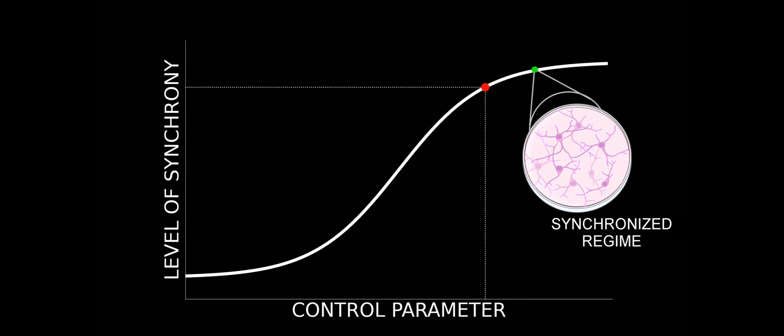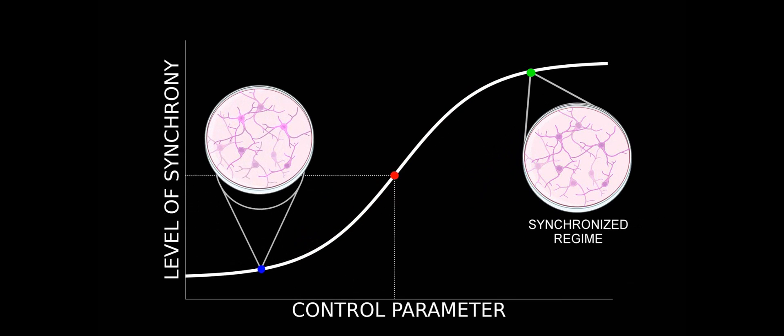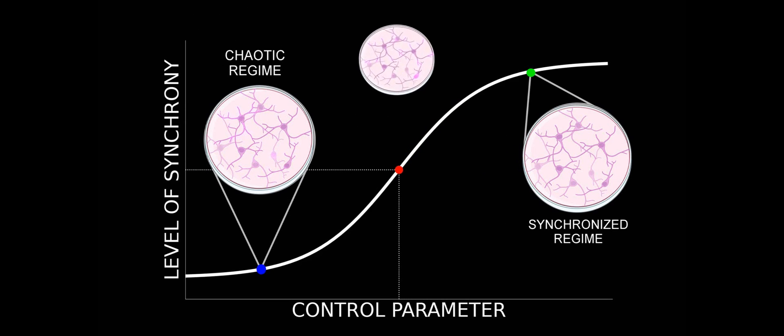For example, they could all decide to activate or fire at the same time leading to a completely synchronous regime, or otherwise they could decide to ignore the others and just fire whenever they want, producing an unharmonious regime of chaotic activity.